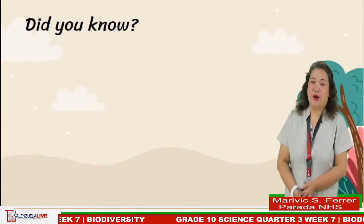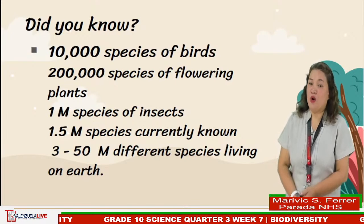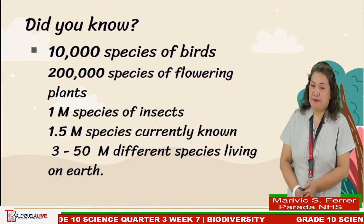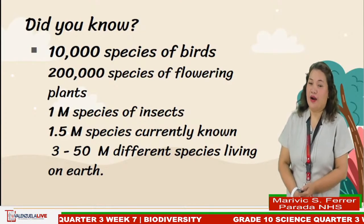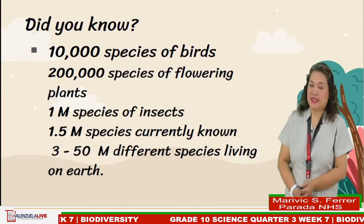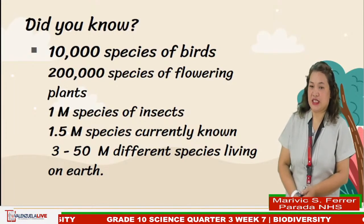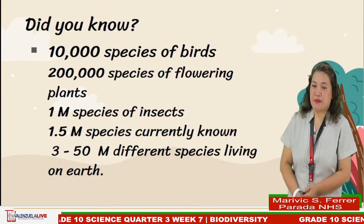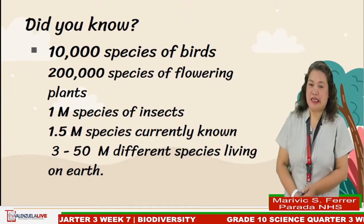Did you know that there are more than 10,000 species of birds, 200,000 species of flowering plants, and almost 1 million species of insects in the world? The number of species identified has increased substantially in recent years. There are 1.5 million species currently known, although this number is thought to be only a fraction of the species that exist today. New species are being identified every day, and it is estimated that there are anywhere between 3 and 50 million different species living on Earth.